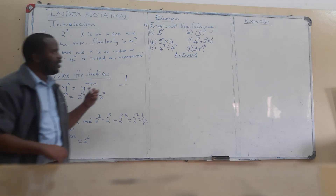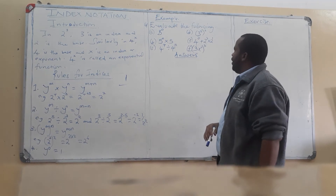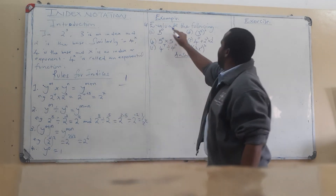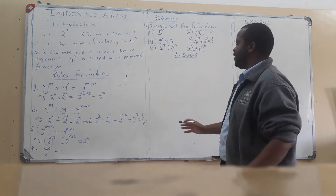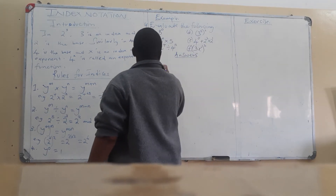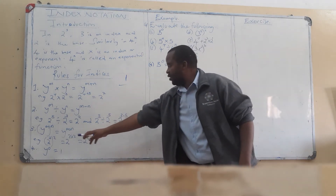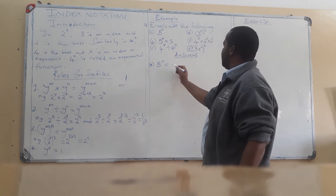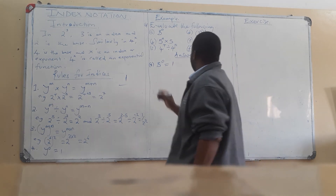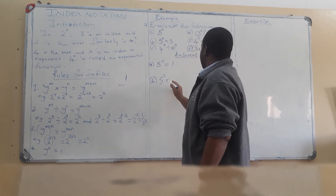I hope these rules or laws are very clear. Now I have about six worked examples. The overall question says evaluate the following, meaning we need to get the actual answer. Example a: 8 to the power 0. Using rule number four, any number to the power 0 is 1, so 8 to the power 0 is 1. Then example b: 5 to the power 2 multiplied by 5 to the power 1.